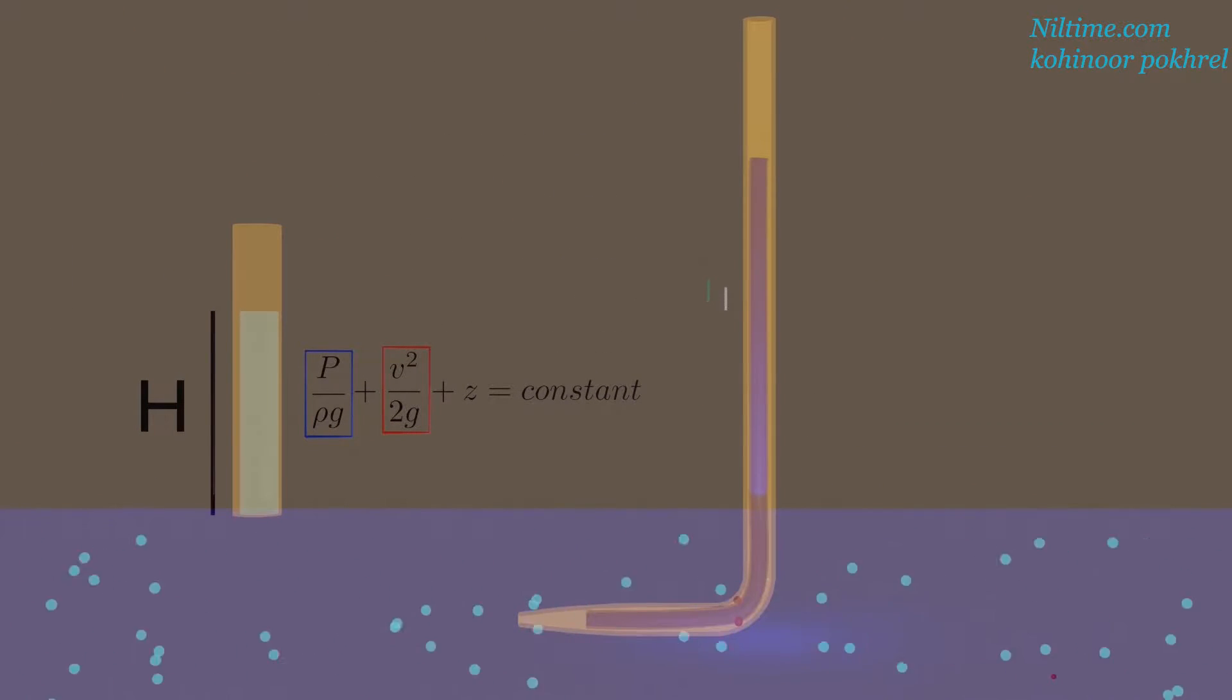This effect increases the water column to additional height, and this additional height is called the velocity or the dynamic head.